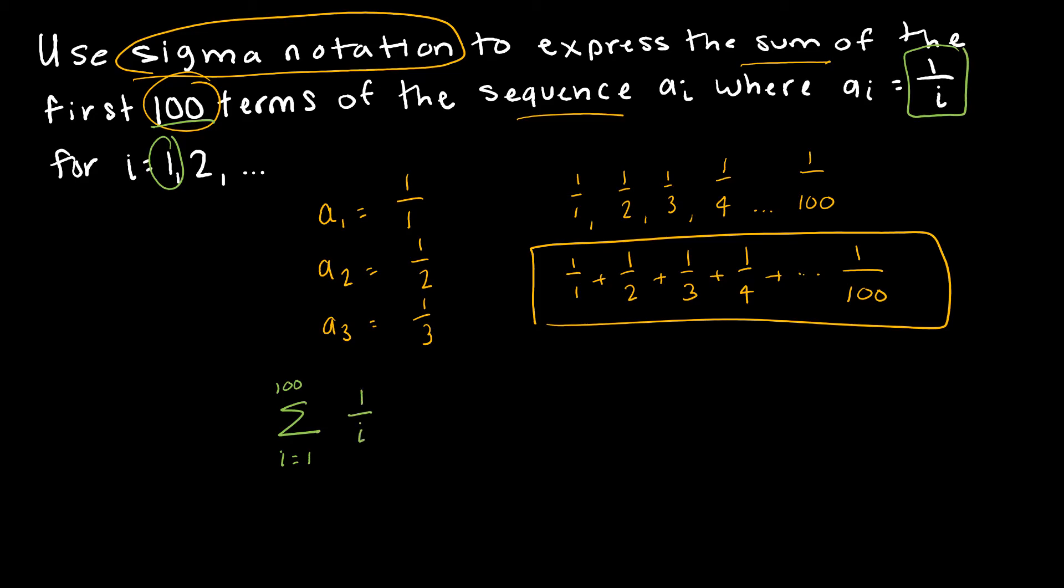1 over i. So the important thing here is that the i here matches the i here, because that's what the i here is telling me to do - start at 1 and then continue to 100.